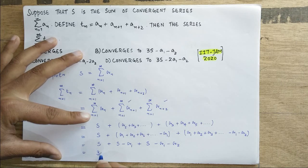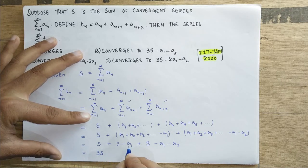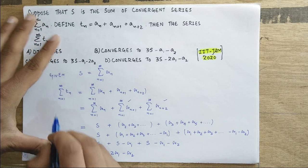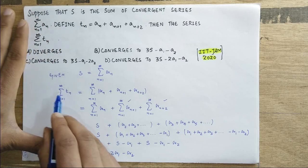3 times S minus 2 times a_1 minus a_2. This is the sum of t_n. So I have option number D.